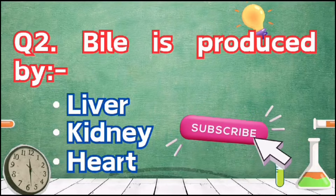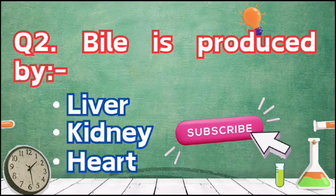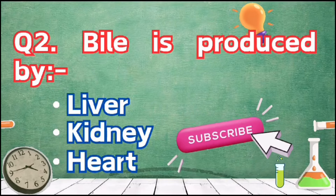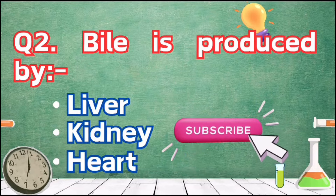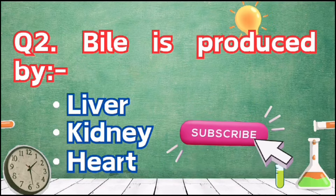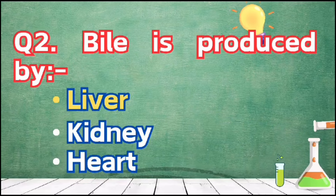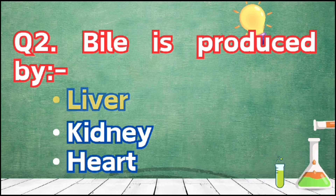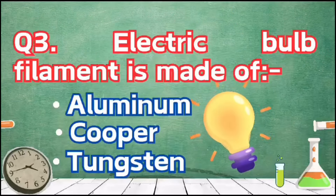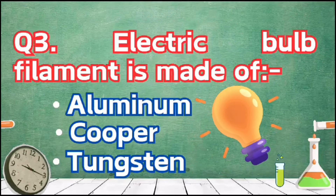Question two: bile is produced by — options are A) liver, B) kidney, or C) heart. Bile is a fluid that helps with digestion. It is produced by the liver and stored in the gallbladder. The right answer is option A, liver.